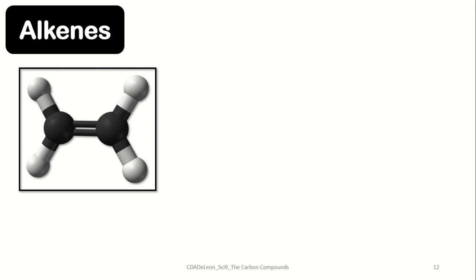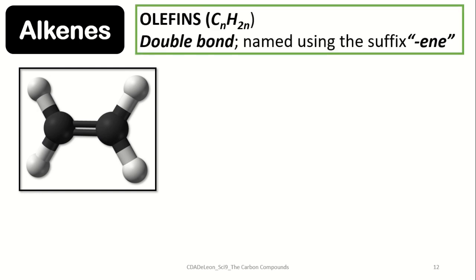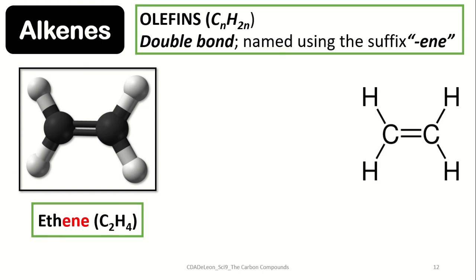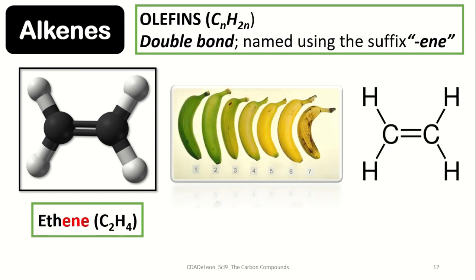Alkenes, also known as olefins, have a general formula of CnH2n, where n signifies the number of carbon atoms. Alkenes possess double bonds and are named using the suffix -ene. For example, ethene is made up of two carbon atoms and four hydrogen atoms. Ethene, or ethylene, is the known plant hormone responsible for the ripening of fruits.